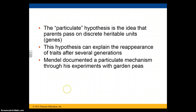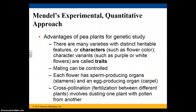Mendel documented a particulate mechanism through his experiment with garden peas — 29,000 pea plants he ended up mating together and observing. He chose pea plants because they have a bunch of different features, which he referred to as characters or characteristics, like flower color. Each of those characters has a variation or a trait — so the character would be flower color, and the variation would be purple or white flowers, for example.